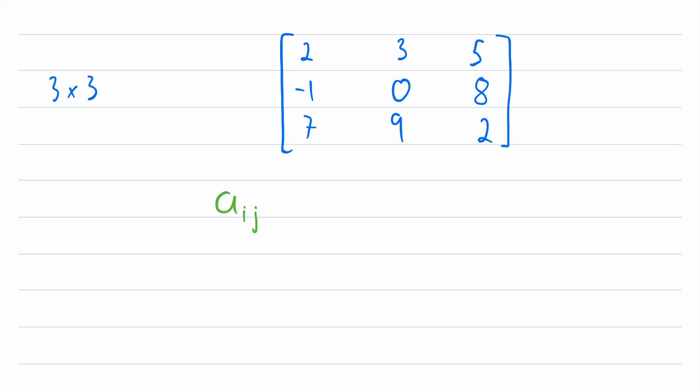Then the main diagonal of a matrix is the collection of all entries A_ij where I is equal to J. So the main diagonal of a matrix is the collection of entries that are in the same numbered row and column.